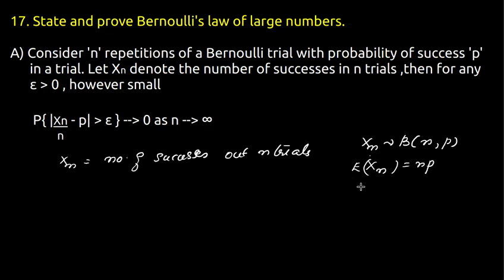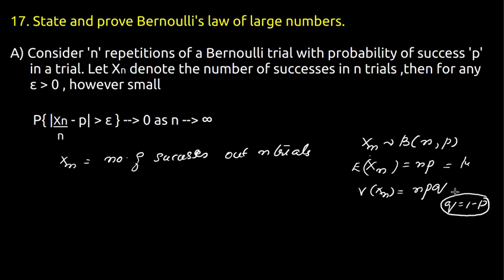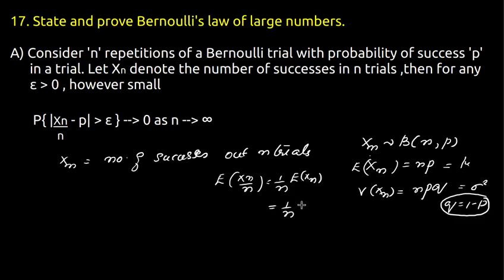Since XN is binomial with parameters n and p, the variance of XN is npq where q equals 1 minus p. The expectation of XN/n is equal to (1/n) times np, which equals p. So the random variable XN/n has expectation equal to p.